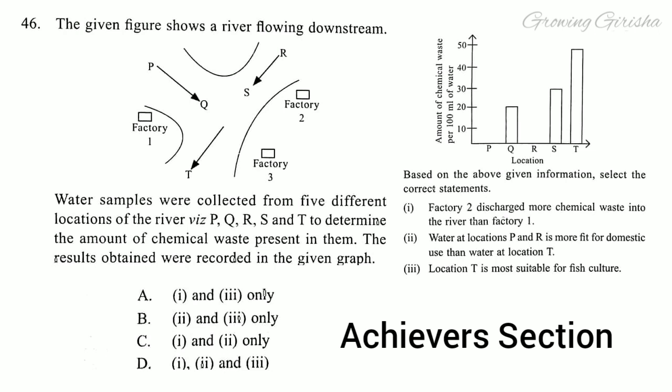Question 46. The given figure shows a river flowing downstream. Water samples were collected from five different locations P, Q, R, S, and T to determine the amount of chemical waste present in them. The results were recorded in the given graph. Select the correct statements. Answer is option C: One and two only.